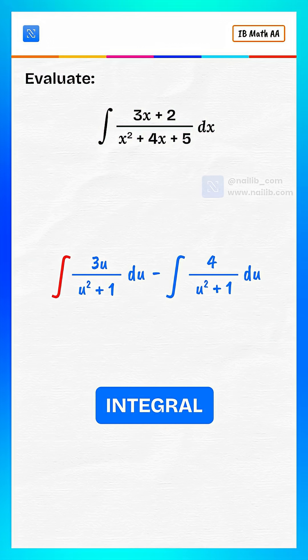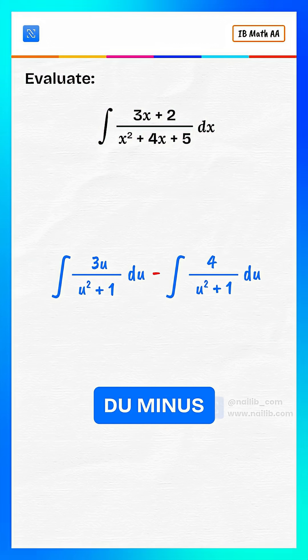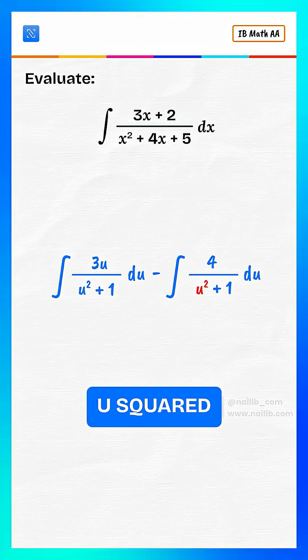Now it becomes integral of 3u over u squared plus 1 du minus integral of 4 over u squared plus 1 du.